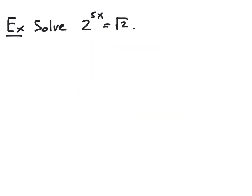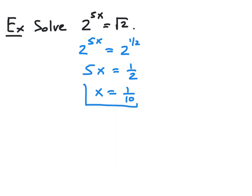For one more example, let's solve the equation 2 to the 5x power equals the square root of 2. We can rewrite this equation so that both sides are 2 raised to powers by remembering that the square root of a number is the same as raising that number to the 1/2 power. So the square root of 2 can be rewritten as 2 to the 1/2 power. Now we have both sides as exponentials with base 2, and using the one-to-one property, we can conclude that the exponents 5x and 1/2 are equal. Dividing by 5 gives x equals 1/2 divided by 5, or 1/10. So our solution is x equals 1/10.